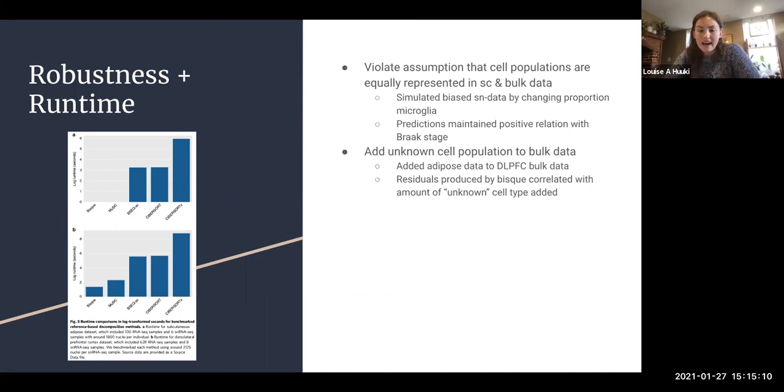The other thing they did was add unknown cell proportion to the bulk data, so they incorporated some of the adipose data into the DLPFC bulk data. I guess Bisque returned residuals that kind of correspond with that unknown, so that's also kind of a cool feature for a deconvolution method to have. And of course you've got a really low runtime, so it also looks pretty good for Bisque.